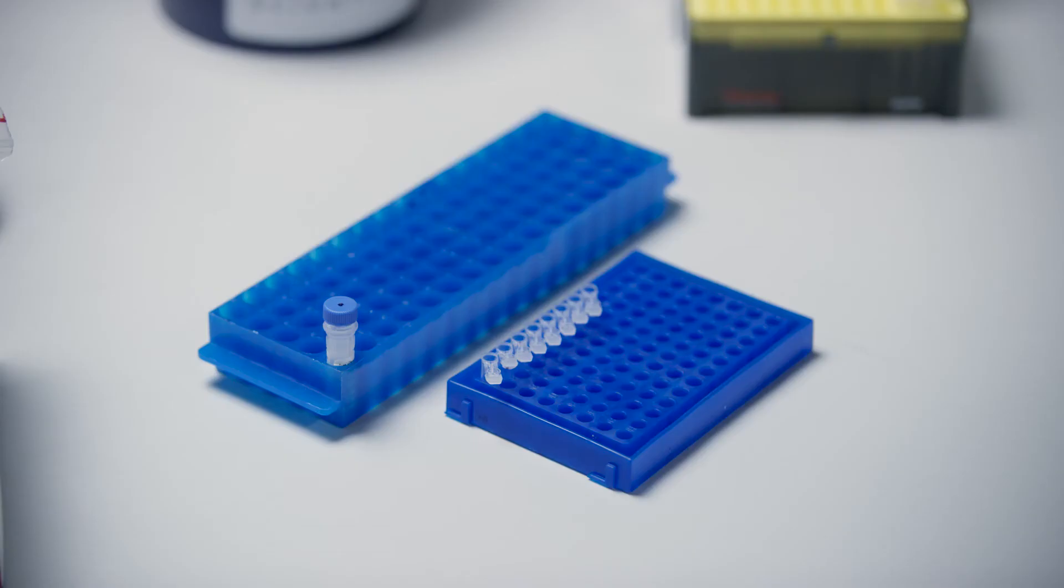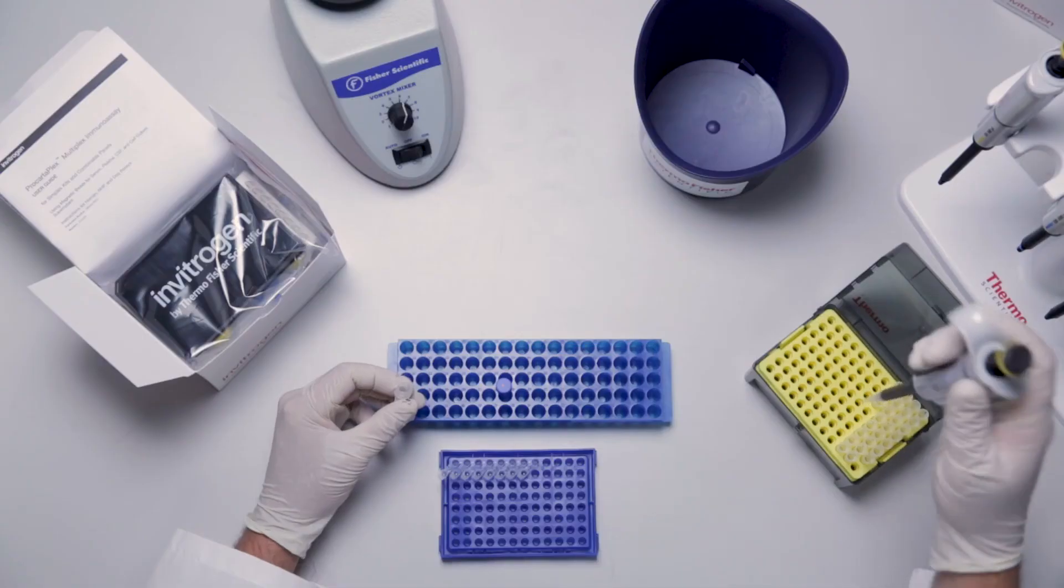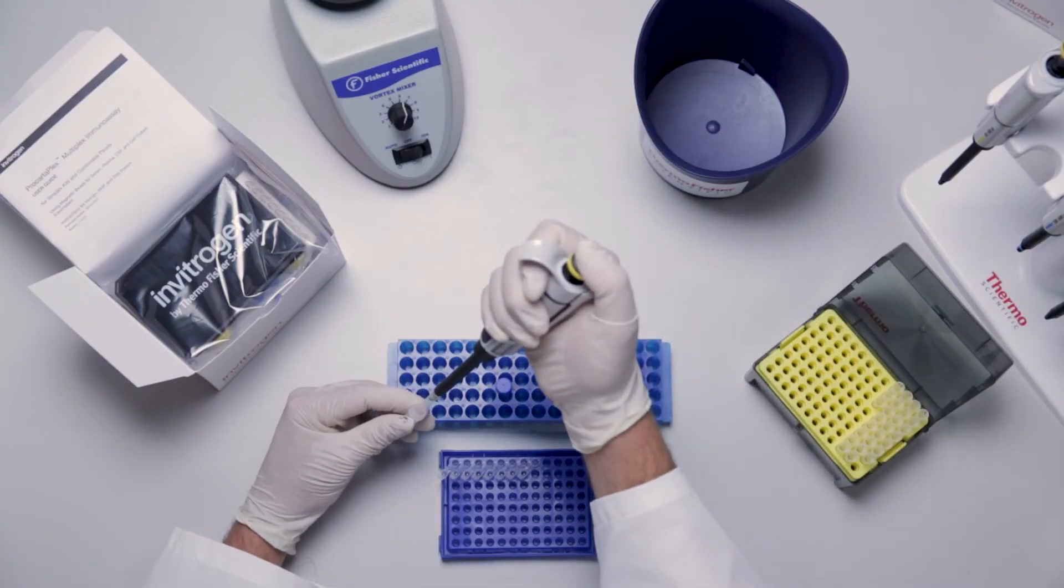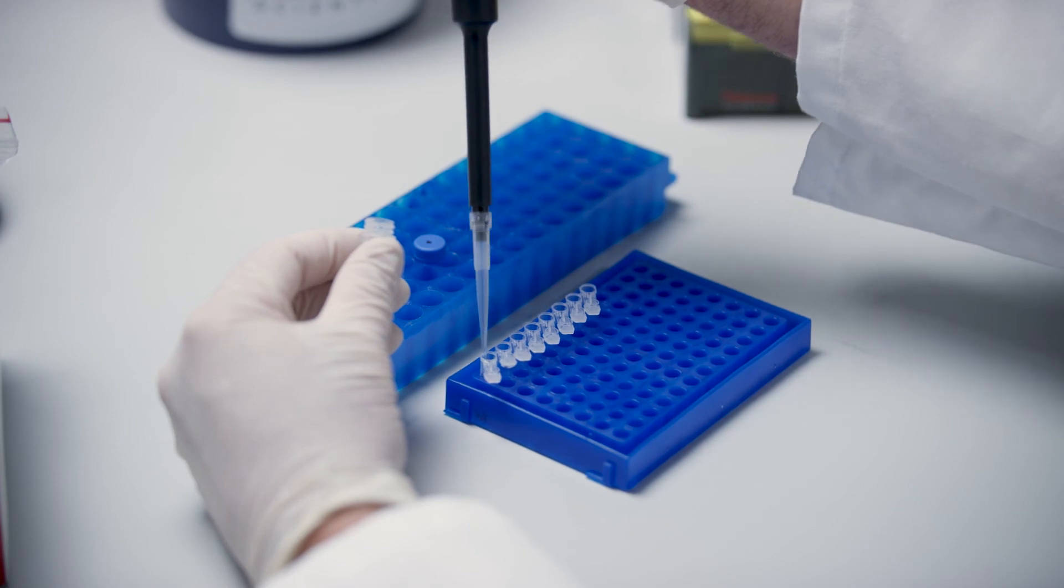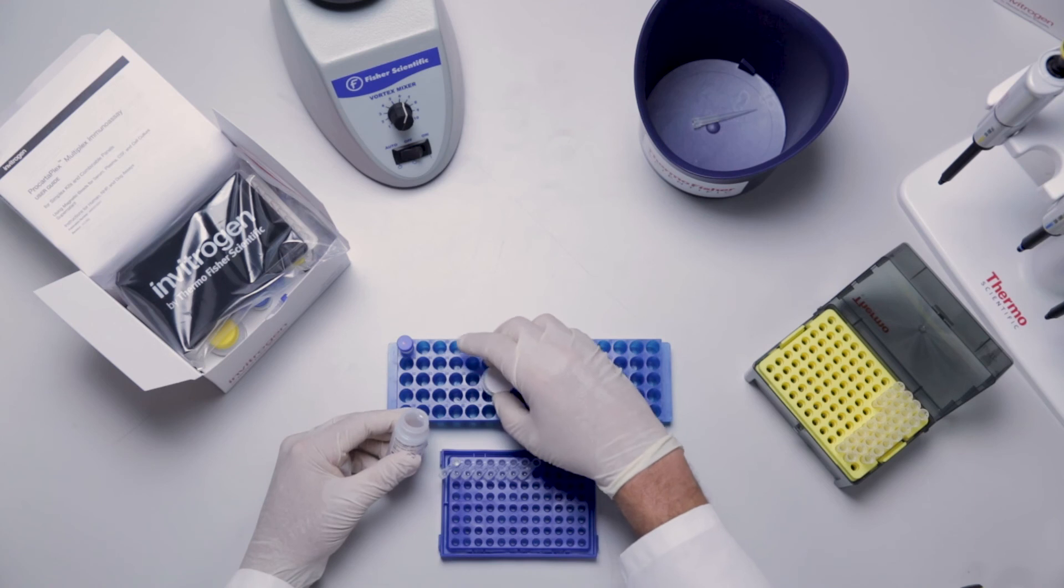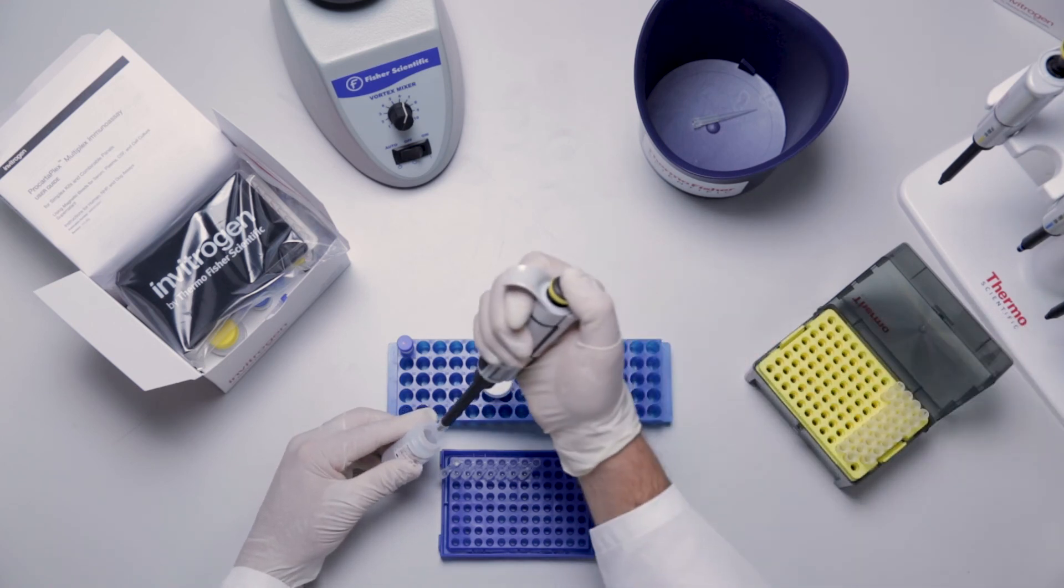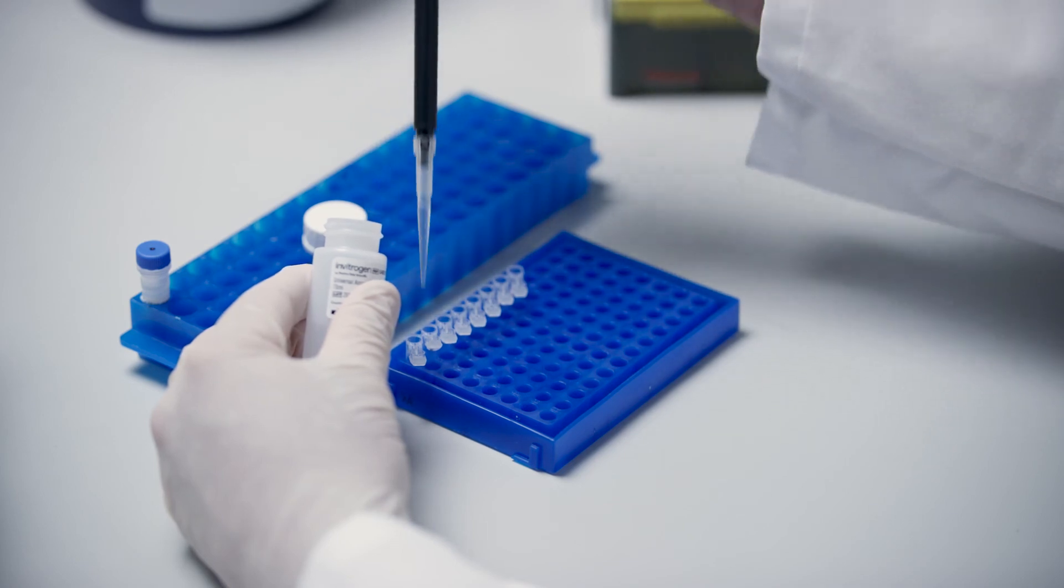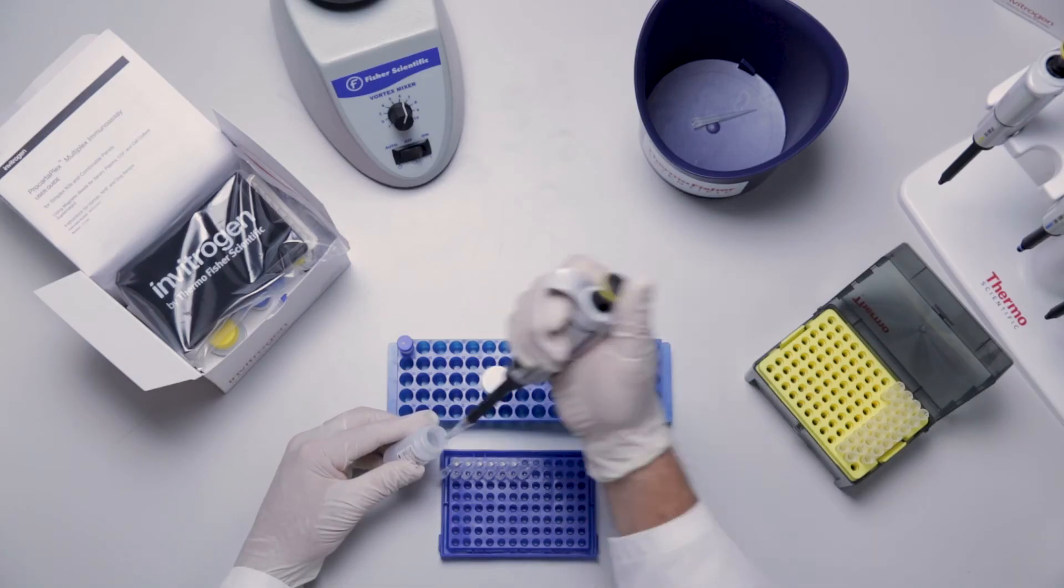Add 200 microliters of the working antigen standard into the first tube labeled standard 1. Add 150 microliters of universal assay buffer or cell culture medium into standard tube 2 through standard tube 7 as well as 150 microliters to tube 8 as a background.